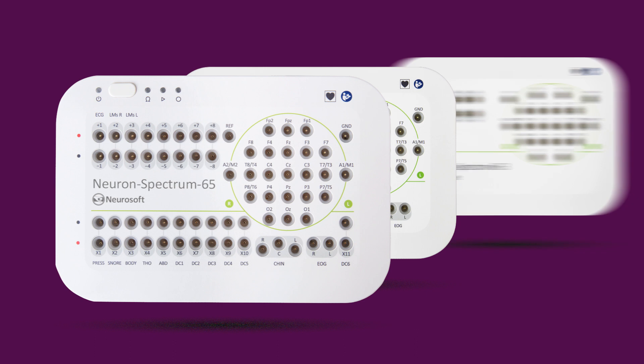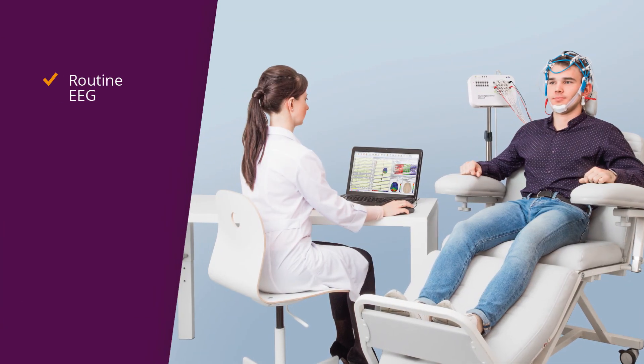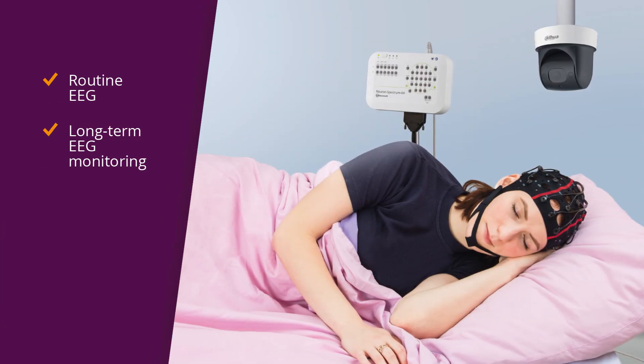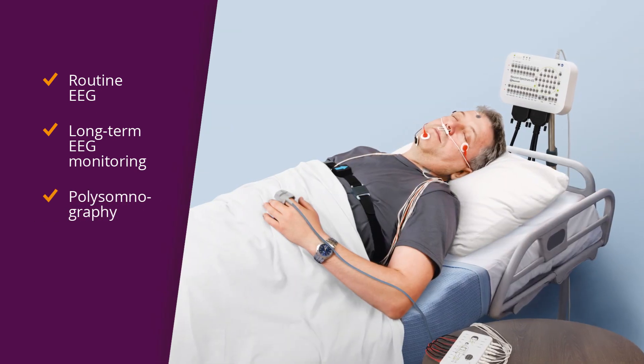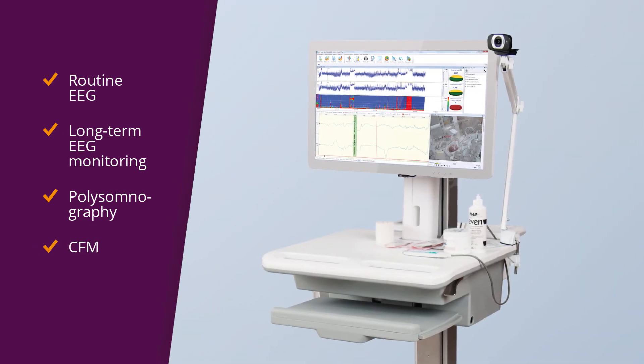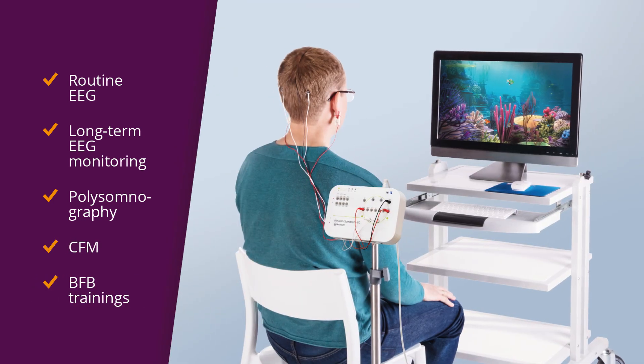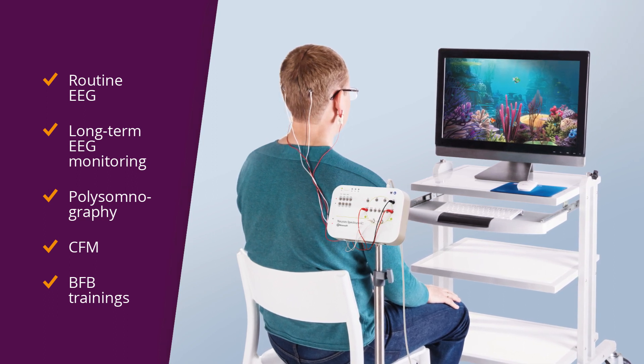Each EEG system of NeuronSpectrum product line is marked by a wide range of leading-edge options and advanced software: routine EEG, long-term EEG monitoring, polysomnography, cerebral function monitoring, biofeedback and neurofeedback trainings. Just choose your winning EEG combination.